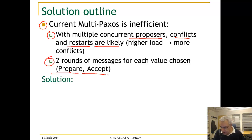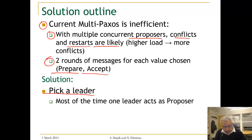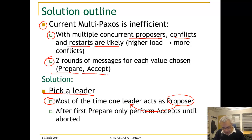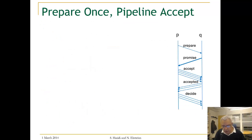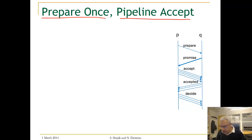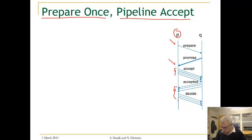The solution is to have, most of the time, one proposer acting as leader — that is best effort. That proposer, after the first prepare, only performs accepts until aborted. That is why we call this solution prepare once, pipeline accept. A proposer acting as leader will do a prepare, get a promise, then issue multiple accepts and get multiple accepted messages and decide.